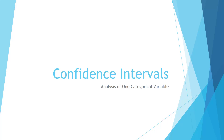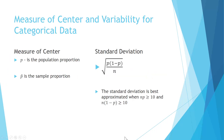In this lesson, we're going to learn about confidence intervals for a single population proportion. Before we get too far into this, we want to make sure that we understand some basic terminology. When we talk about the measure of center, we're going to use p as the population proportion and p-hat as the sample proportion. The standard deviation is the square root of p times 1 minus p over n, and it's best approximated when n times p is greater than or equal to 10 and n times 1 minus p is greater than or equal to 10 — referring to the number of successes and failures.